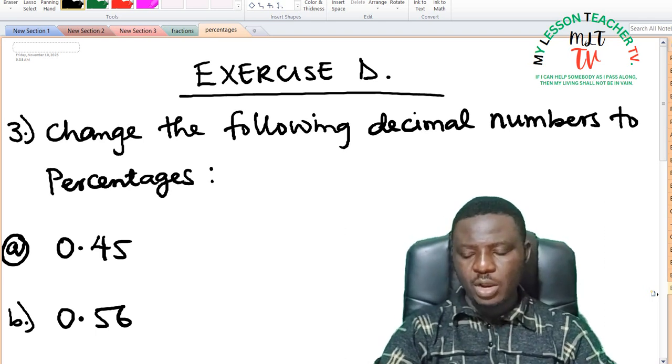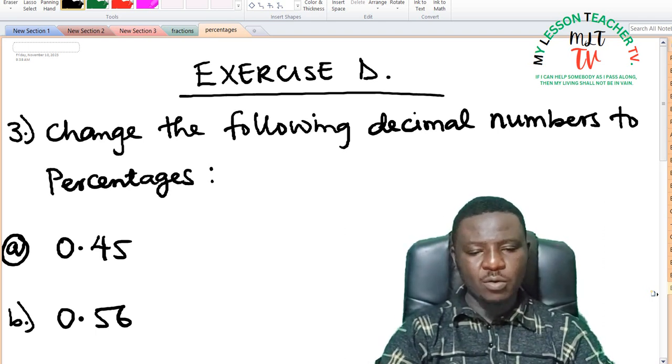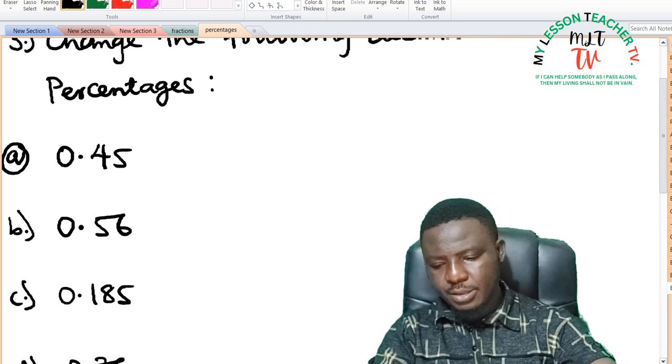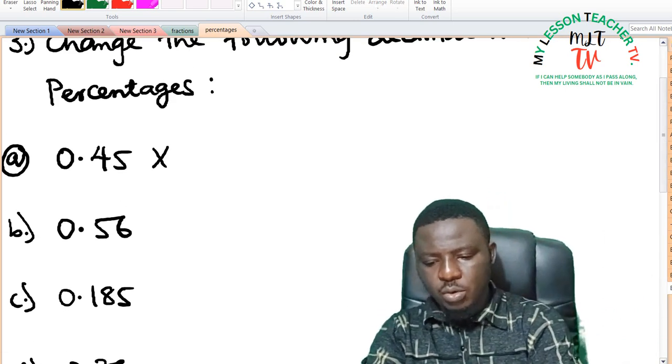In Exercise D, we are asked to change the following decimal numbers to percentages. As usual, you multiply by 100. This gives us 45%.